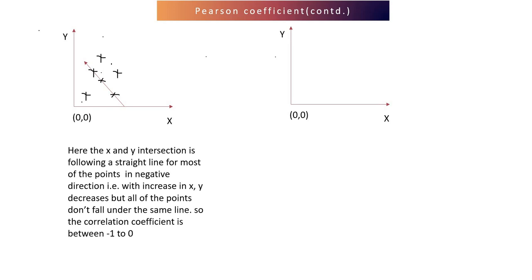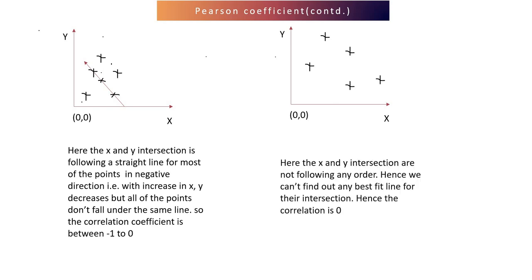In the final example, the data points are in a scattered manner and we cannot draw any best-fitted line. Based on that, if there is no clear relationship between x and y, the correlation is zero — because we have all scenarios: increase in x has a positive impact on y in some cases and a negative impact in others. That's why the correlation is zero. This is how we calculate the Pearson correlation coefficient.